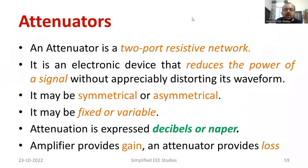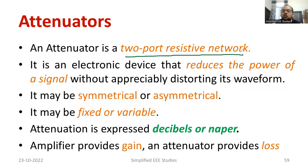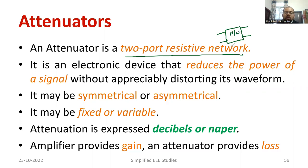Basically, attenuator is a two-port resistive network. One pair of input and another pair of output — that is what we call a two-port network. There are different types of topologies like Z parameters, Y parameters, ABCD parameters, which you must have learned in network analysis. So, attenuator is basically a two-port network.